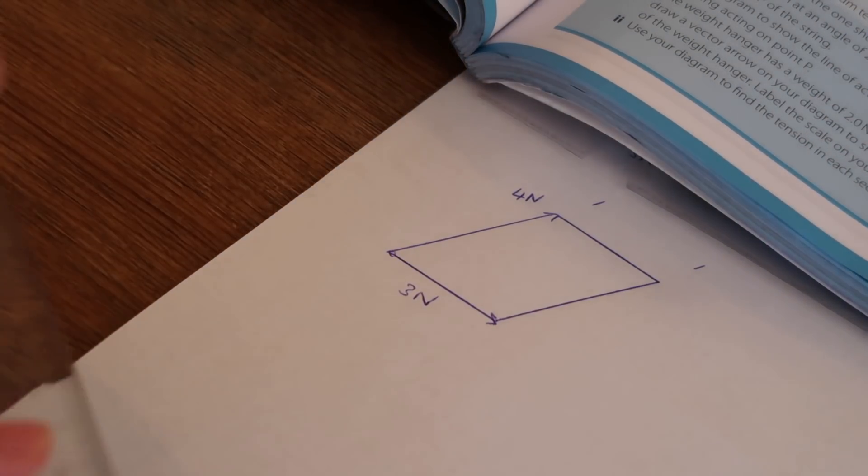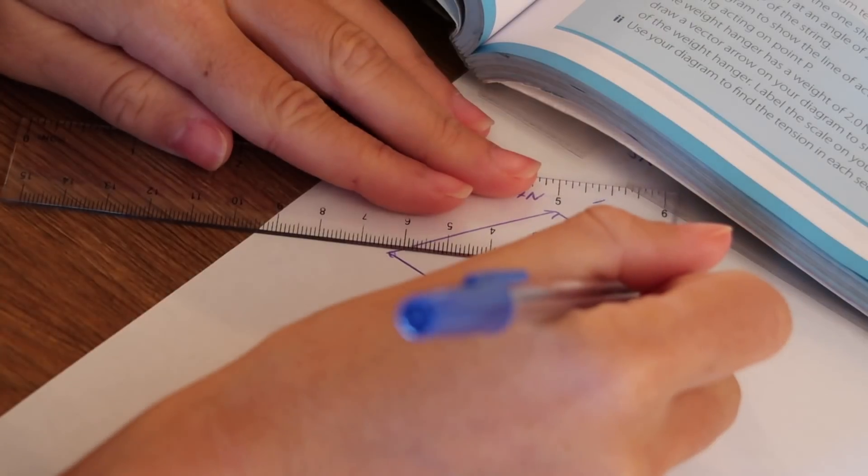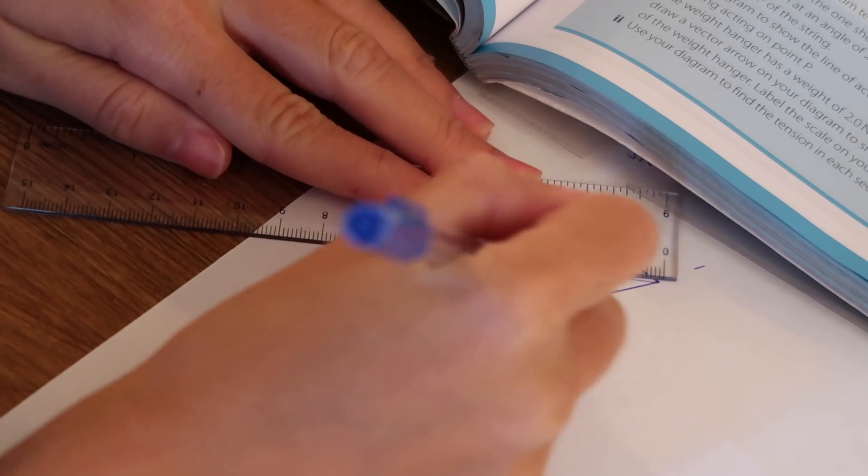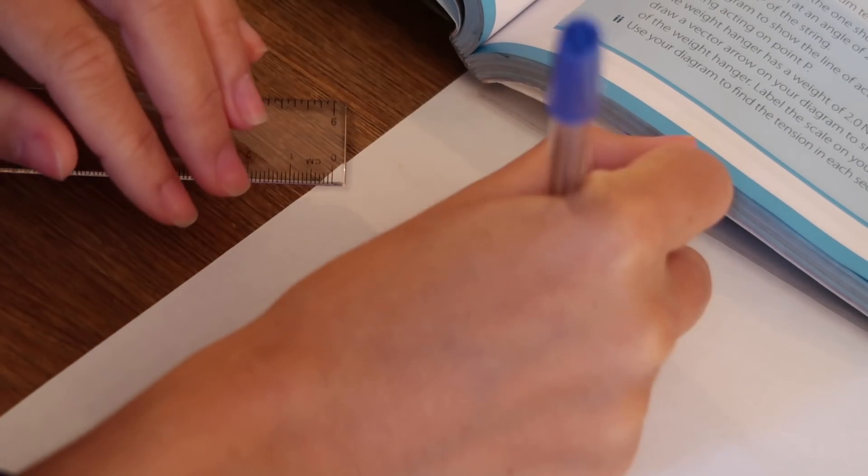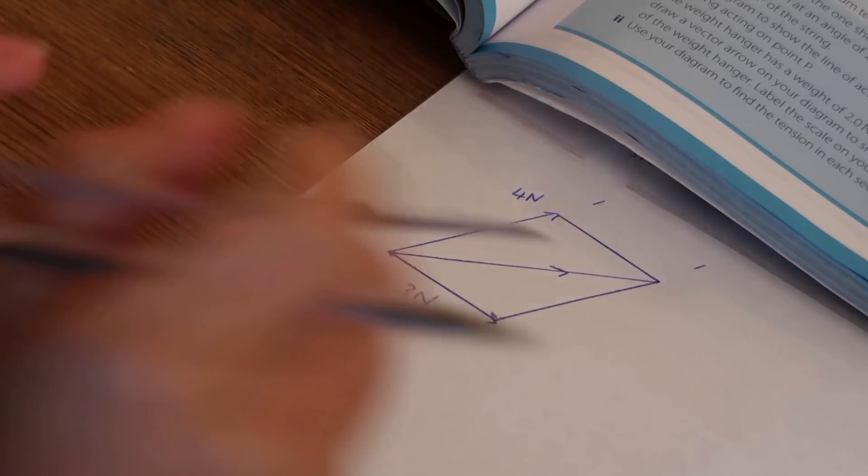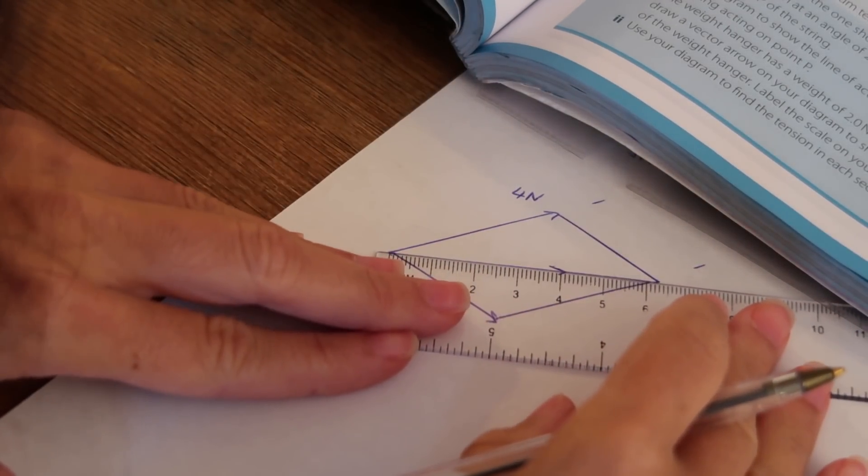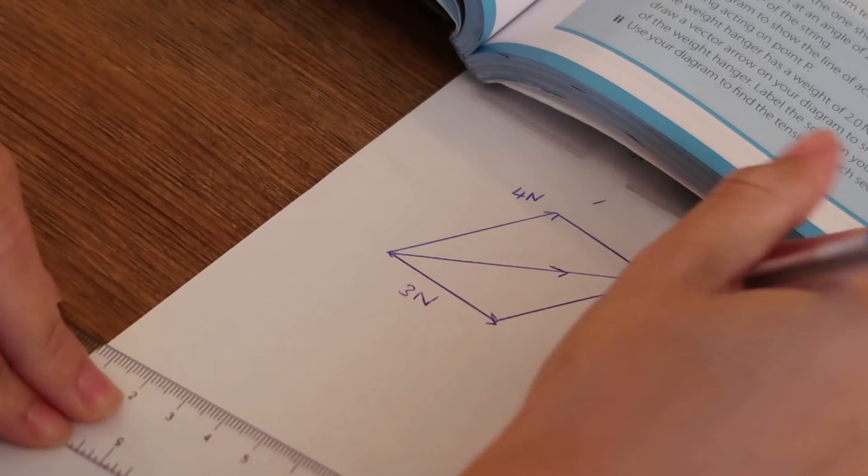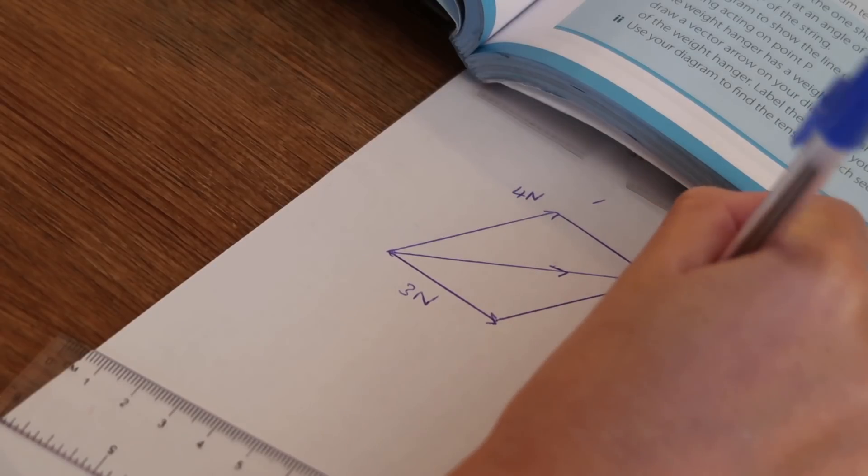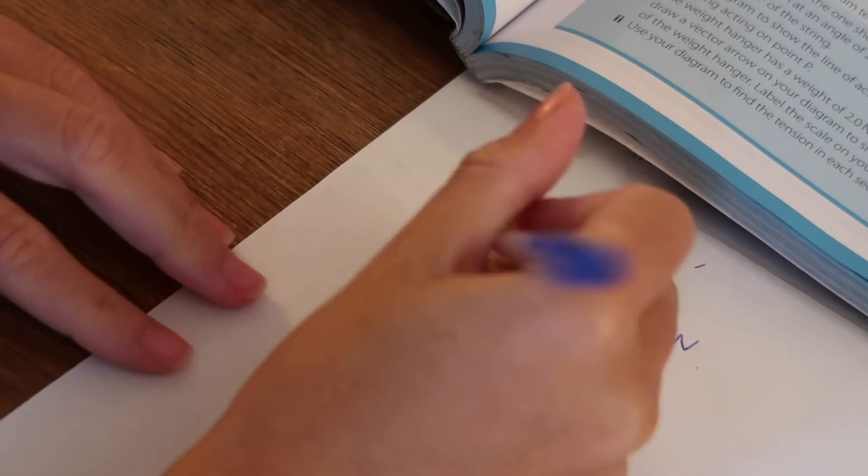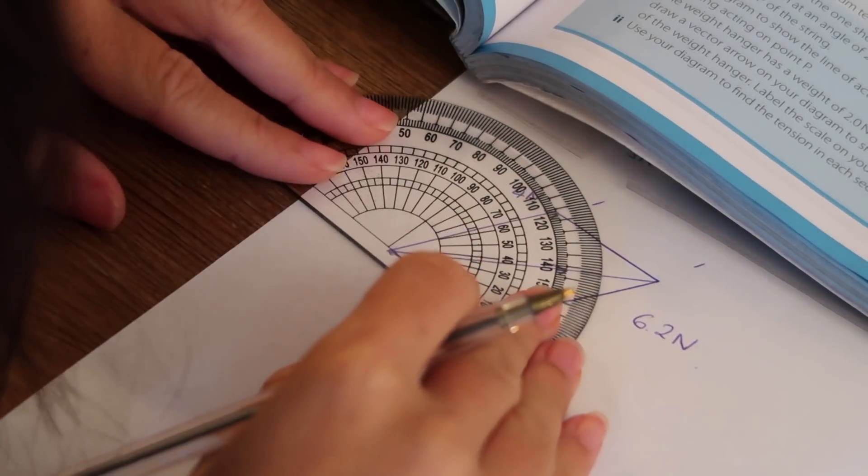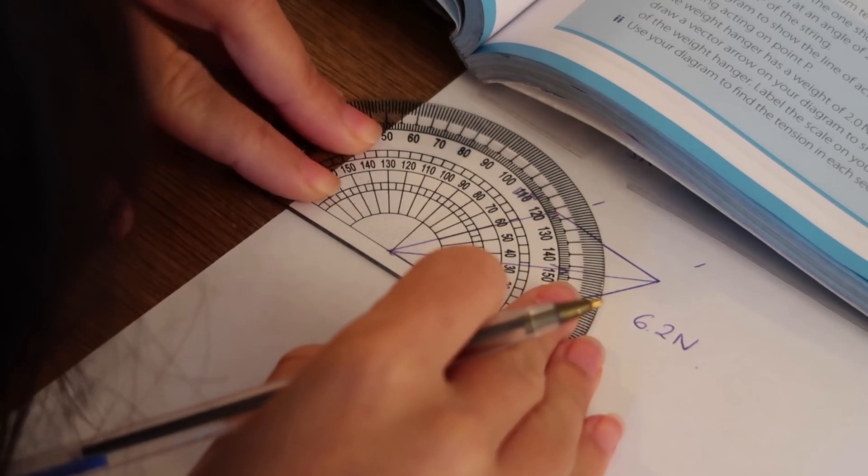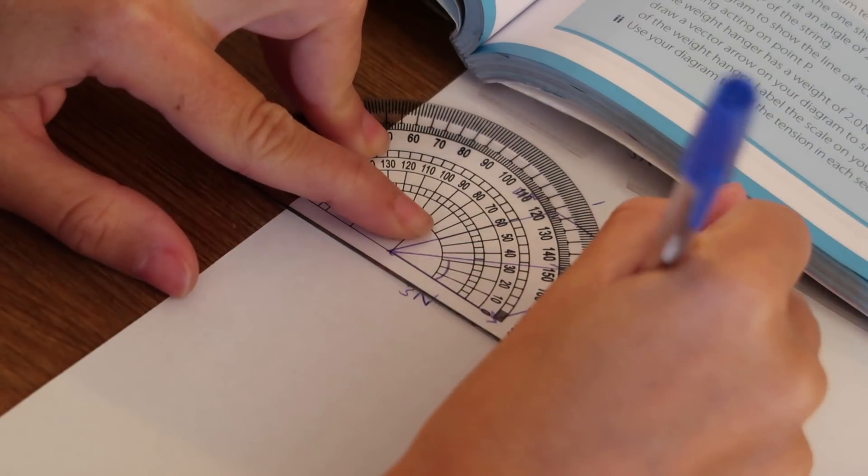Perfect. And now to work out the resultant force, simply join. Measure the length of this line. There will be error margins guys. So don't worry too much. That's 6.2 centimeters. So that's 6.2 newtons. And then measure this angle here to work out the direction. It's 33 degrees.